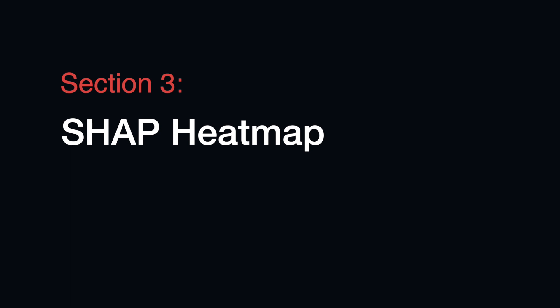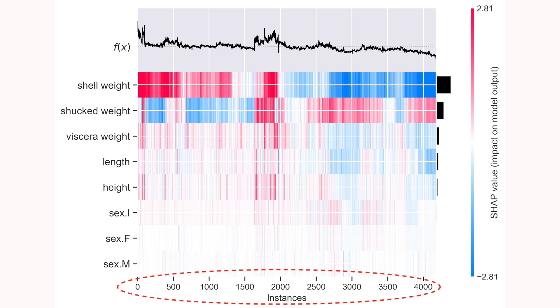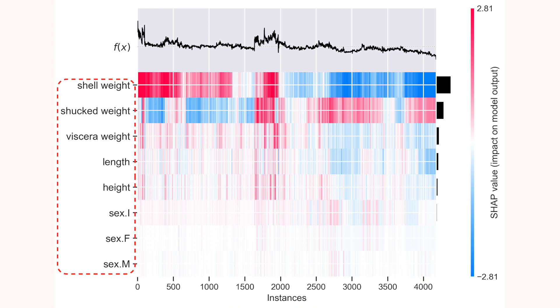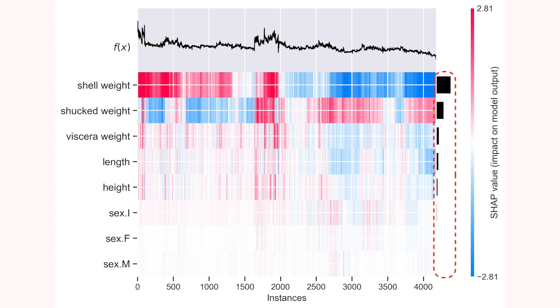Now let's see if the heatmap can provide more insight. There's a lot going on in this chart, so let's break it down. On the x-axis, we have a tick for each instance in our dataset. The y-axis gives the model feature. The line above each instance is colored by the SHAP value for that feature. The f(x) line gives the predicted number of rings for that instance. The bar on the right gives the mean SHAP values — these are the same values we saw in the mean SHAP plot.